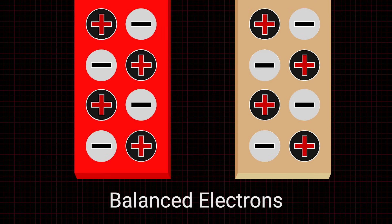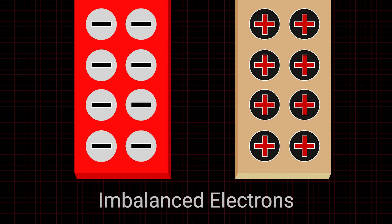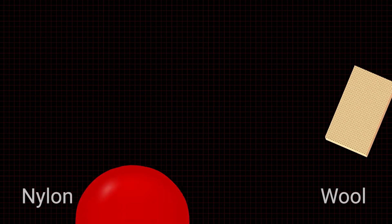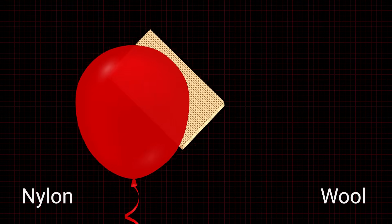Static electricity is a natural phenomenon that occurs when there's an imbalance of electrons on a material. When two materials composed of different molecules rub together, there can be an exchange of electrons, causing a static charge.